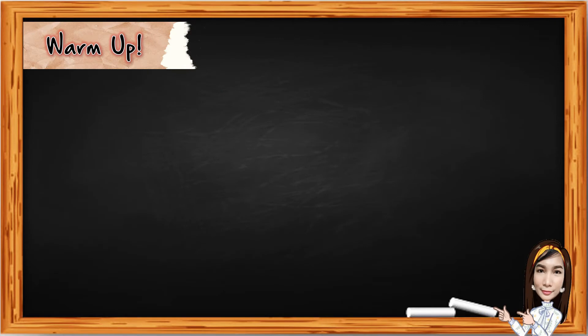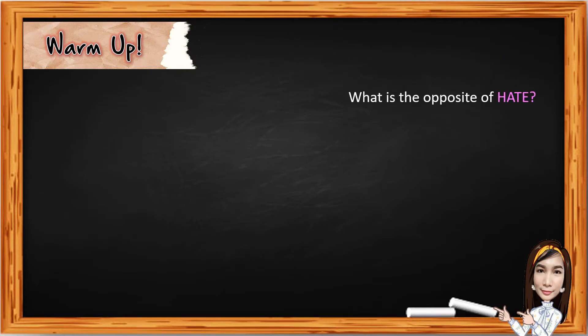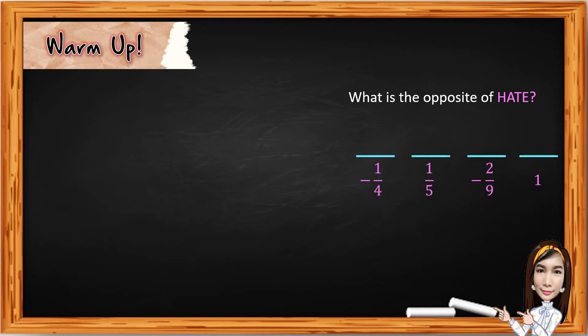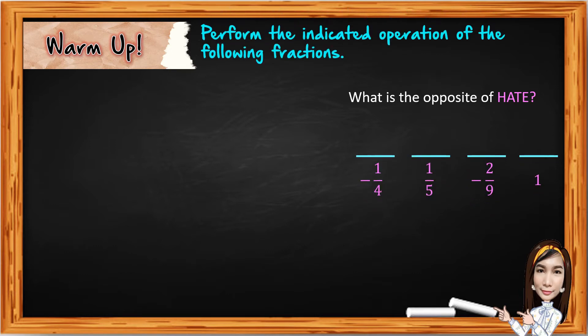For warm-up, you need to answer the question: what is the opposite of hate? To decode the answer, you need to perform the indicated operation of the following fractions. First, we have letter E: four over five plus one over five. As you noticed, we have the same or like denominators.